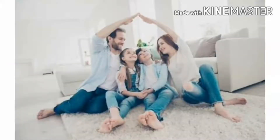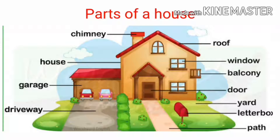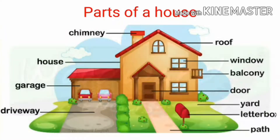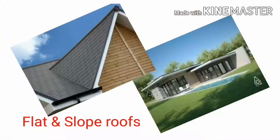A house protects us from heat, cold, rain, dust, wild animals and bad people such as thieves. A house keeps our family happy and safe. Children, what are the different parts of a house? A house is made of walls, floor, windows, doors, and roof.